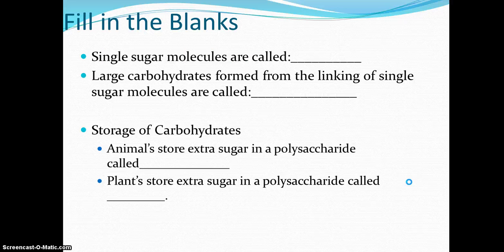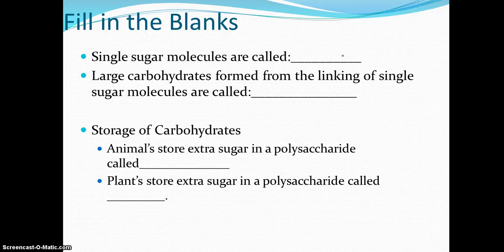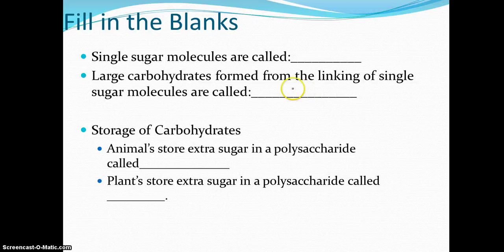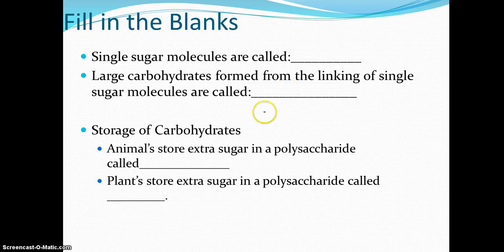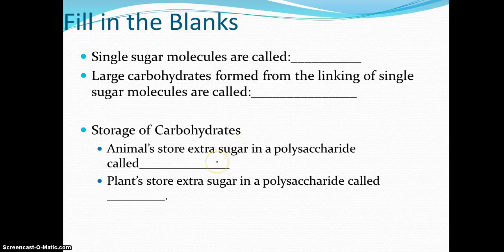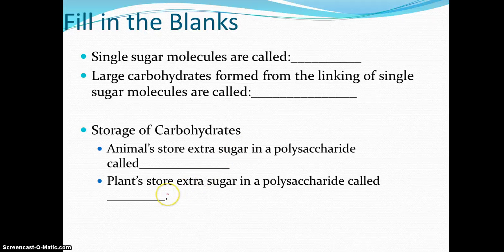So, a little review here of the biochem. Single sugar molecules right here, monosaccharides. Large carbs form from linking of those monosaccharides. Those are the polysaccharides. That would go right here. We and other animals store extra sugar in a polysaccharide called glycogen. And plants store extra carbs in a polysaccharide called starch. So, you're responsible for this stuff. We're going to be mentioning these words again. And it's just good to review these things.